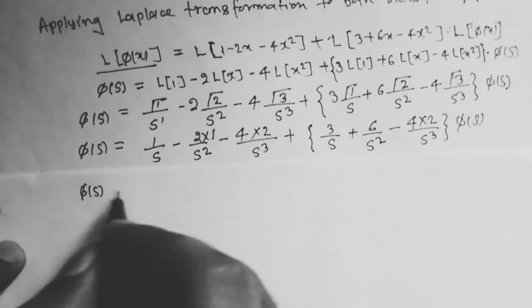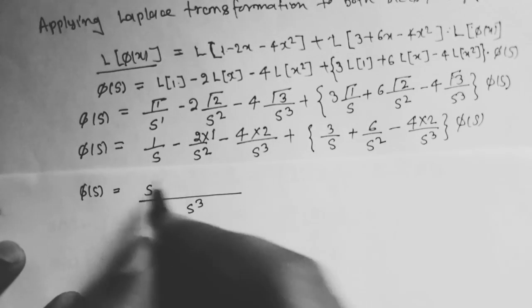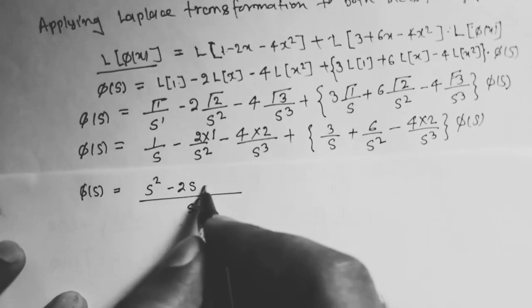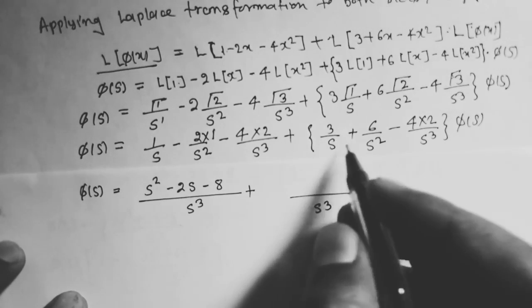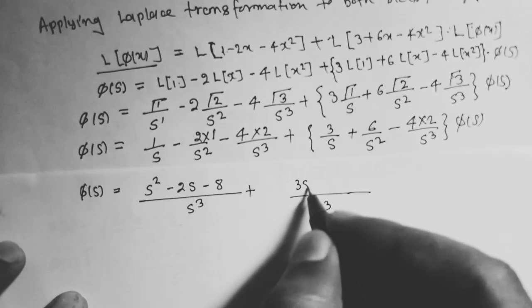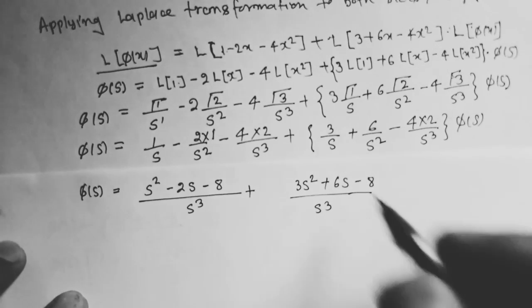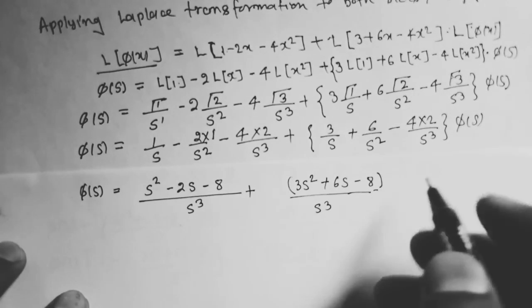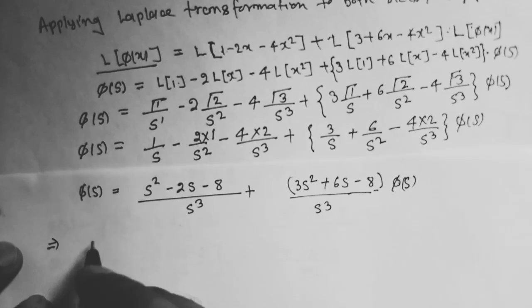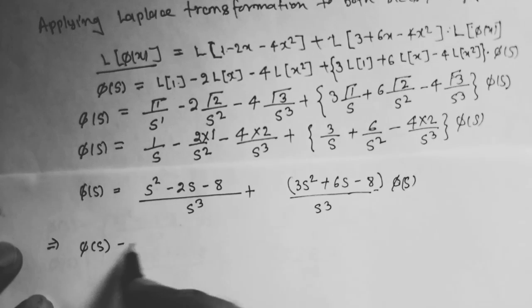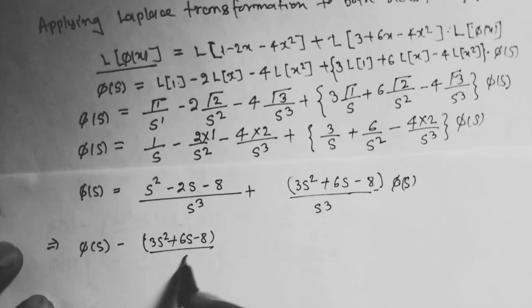φ(s)·[1 - 3/s - 6/s² + 8/s³] = (s² - 2s - 8)/s³. Simplifying: φ(s)·[(s³ - 3s² - 6s + 8)/s³] = (s² - 2s - 8)/s³.